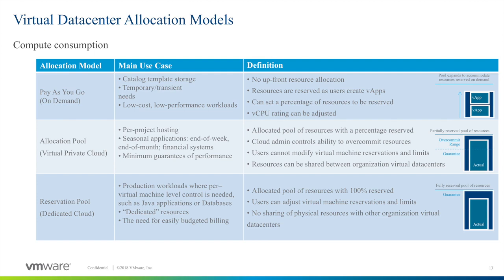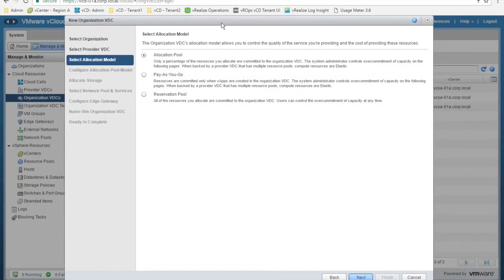Then we have the reservation pool, also known as dedicated cloud. The main use case is production workloads where per-virtual-machine level control is needed, such as Java applications or databases, dedicated resources, or the need for easily budgeted billing. The definition is an allocated pool of resources with 100% resources reserved. Users can adjust virtual machine reservation and limits, and there is no sharing of physical resources with other organization virtual data centers — so a fully reserved, 100% guaranteed pool of resources.